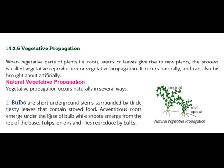First we will discuss bulbs. Bulbs are short underground stems surrounded by thick fleshy leaves that contain stored food. They are underground stems, short in size, with fleshy leaves that contain stored prepared food inside them.